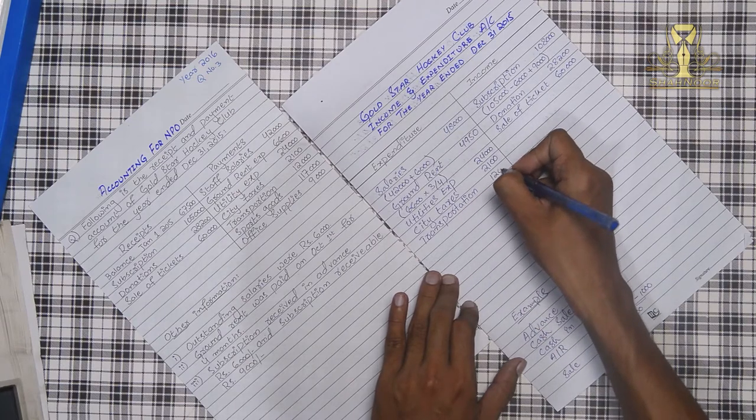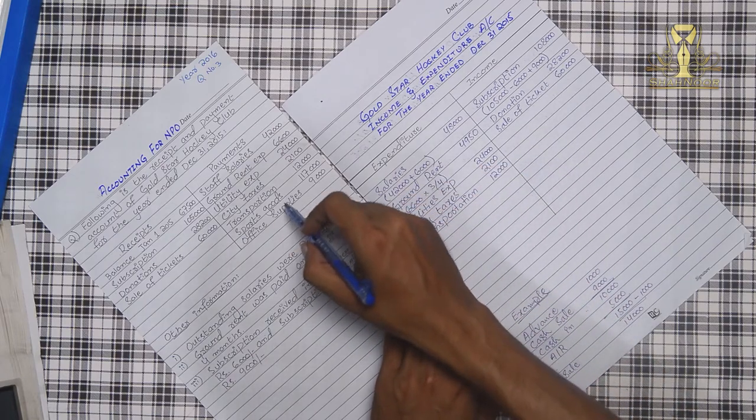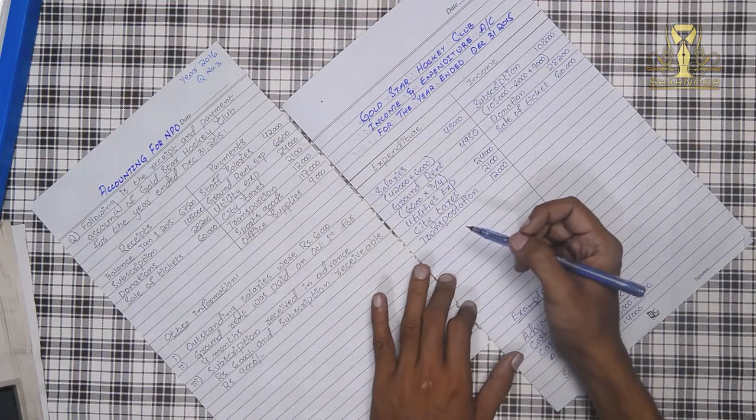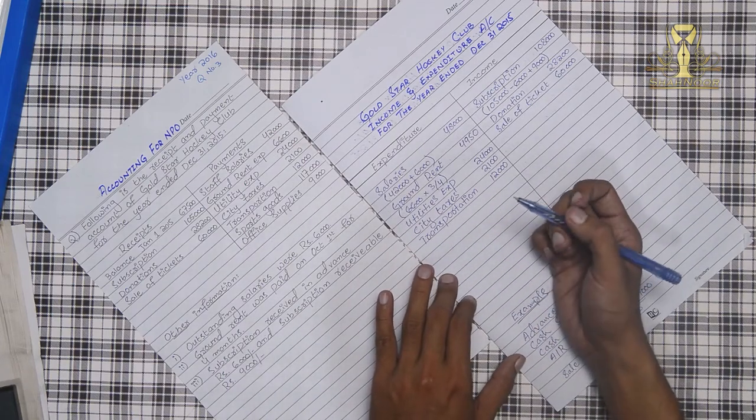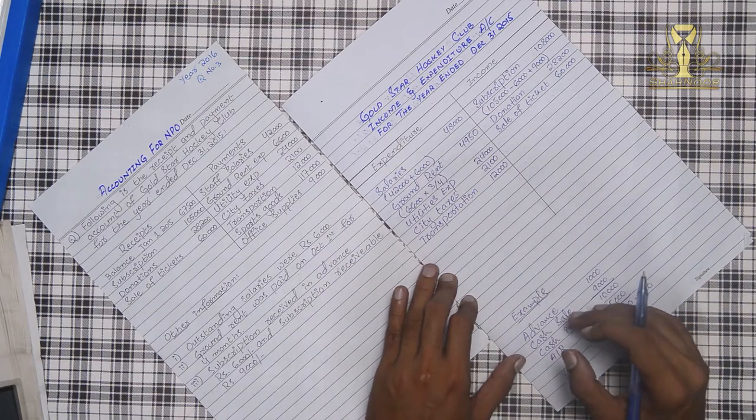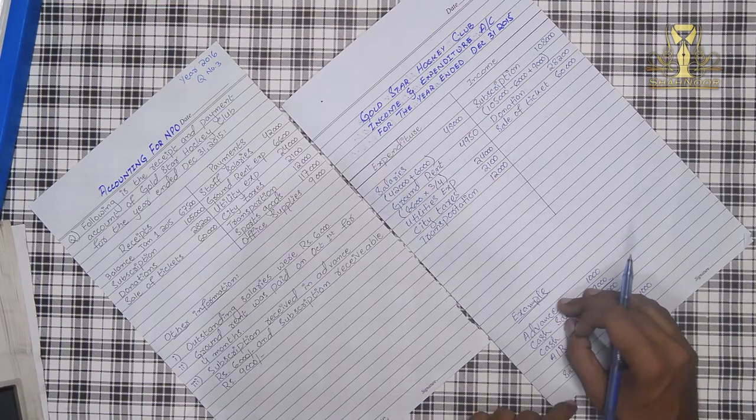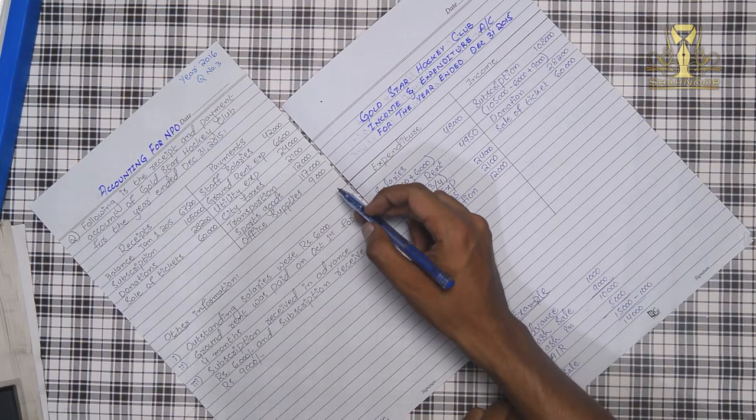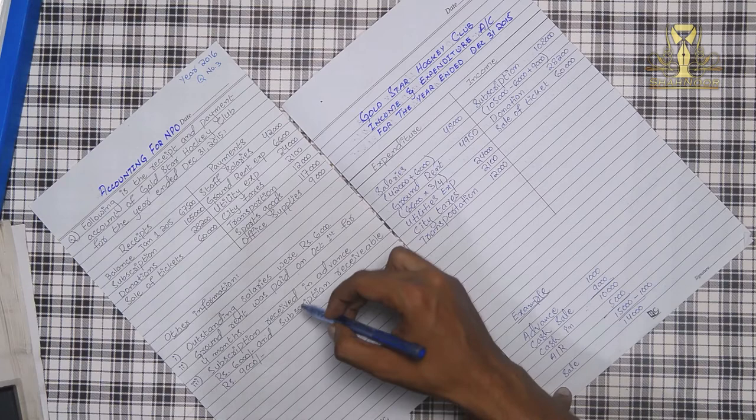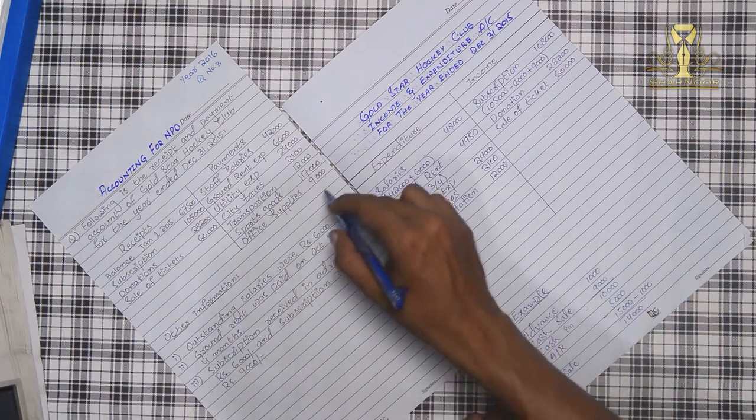Sports goods is not included because goods are known as current asset. Office supplies is not included because it is current asset. This is why office supplies or stationery is shown as a current asset, not as a consumable expense. If there were additional information about consumption, then it would be different. So office supplies of $9,000 is current asset.